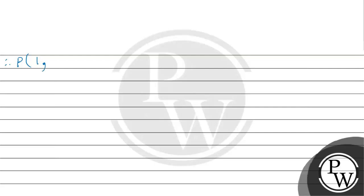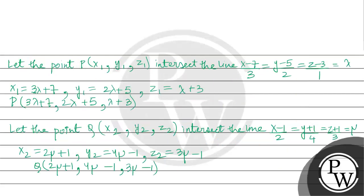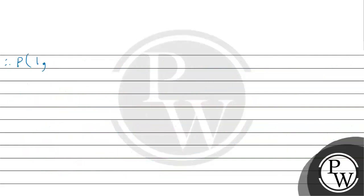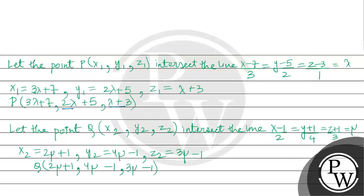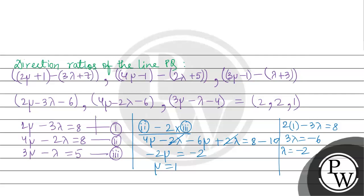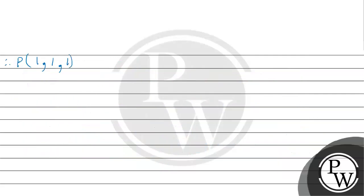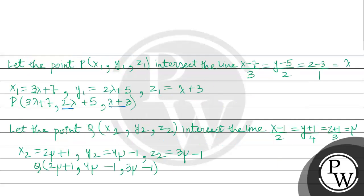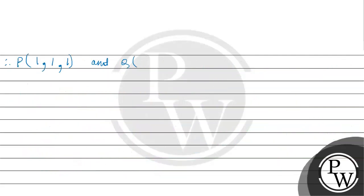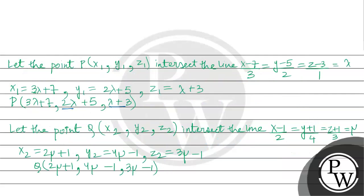Therefore the coordinates of B: x1 equals 3λ plus 7, with λ equals minus 2, gives 3 into minus 2 plus 7 equals 1. Then y1 equals 2λ plus 5 equals minus 4 plus 5 equals 1. And z1 equals λ plus 3 equals minus 2 plus 3 equals 1. So B is (1,1,1). With μ equals 1, Q is: 2 into 1 plus 1 equals 3, 4 minus 1 equals 3, and 3 minus 1 equals 2. So Q is (3,3,2).